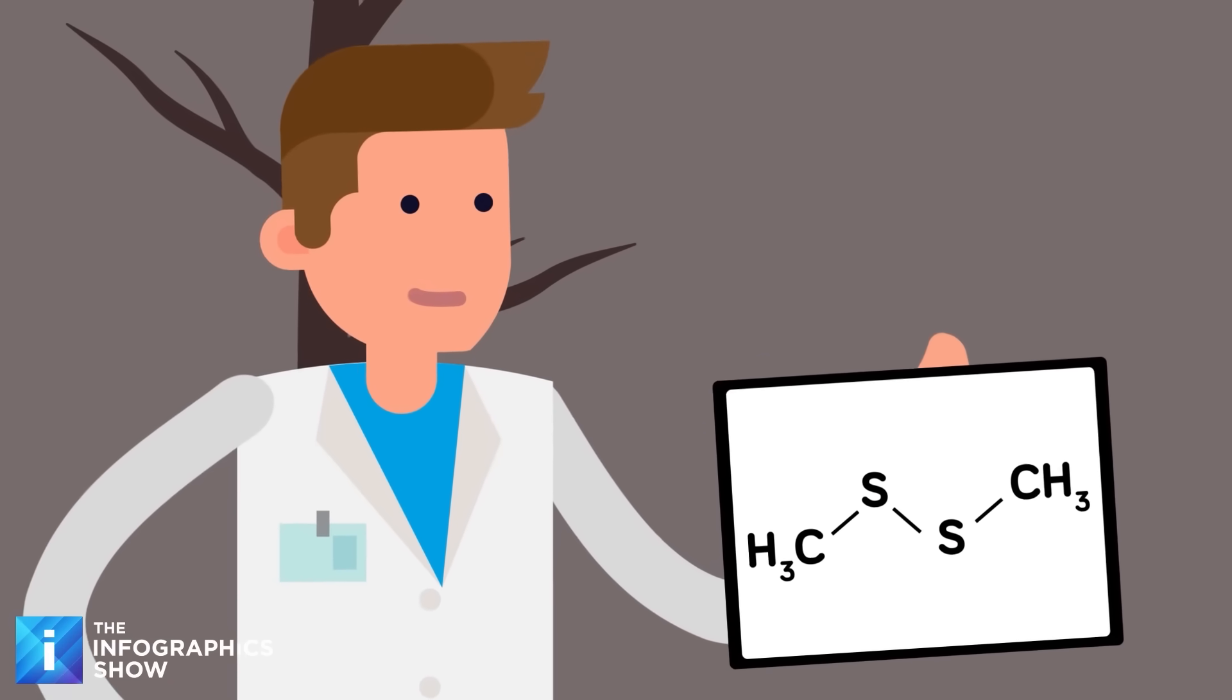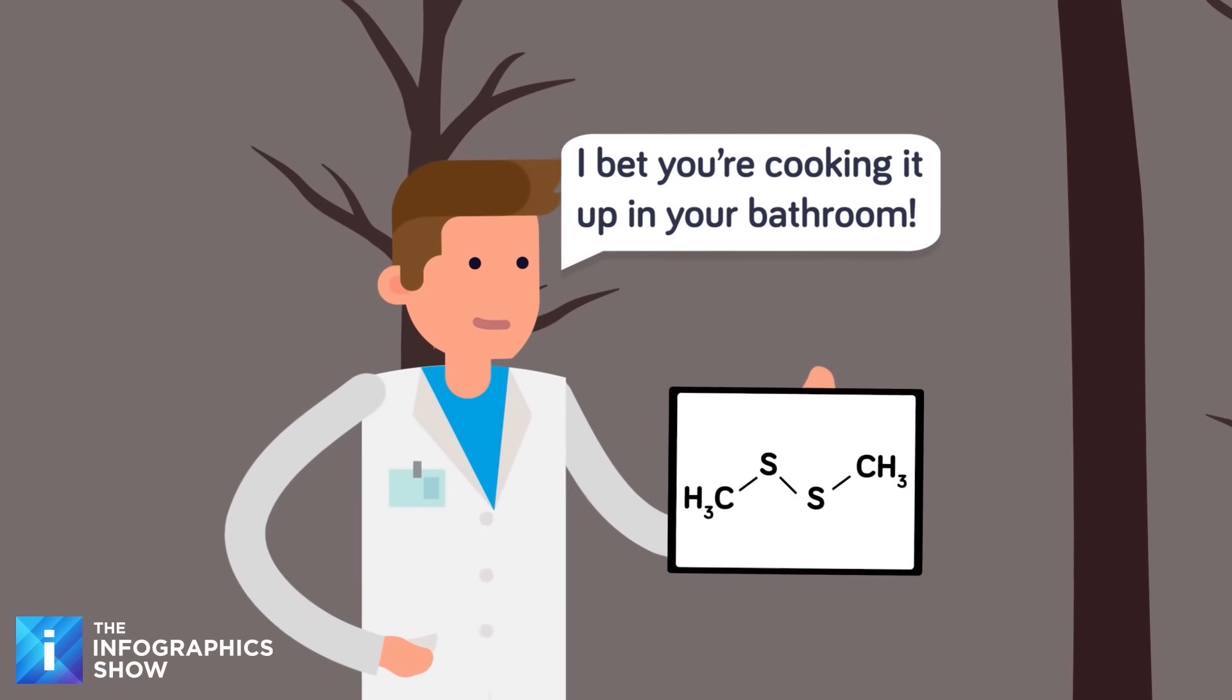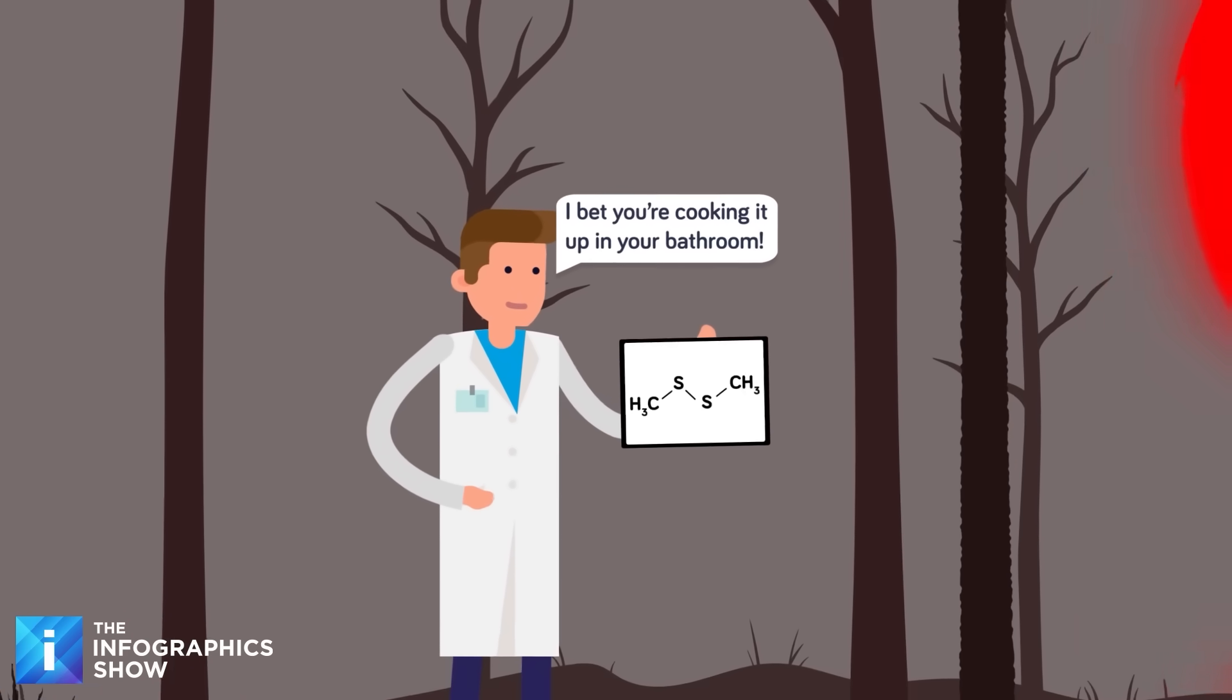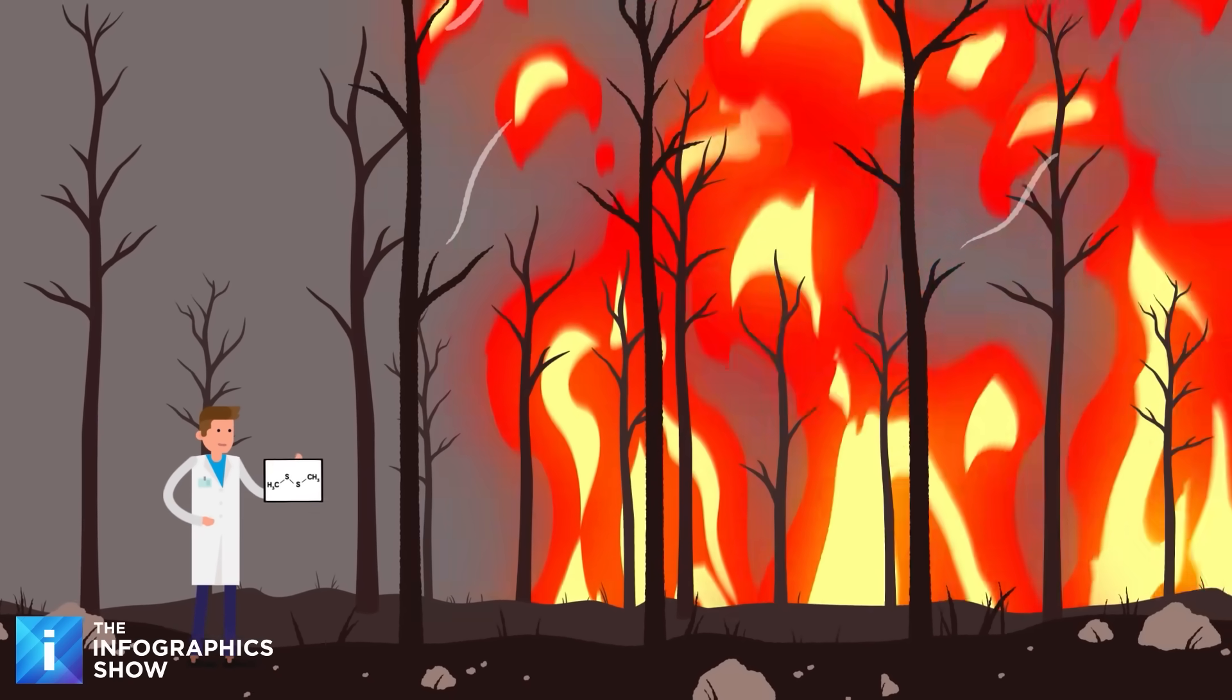DMDS can be produced by a variety of different organisms, including bacteria, fungi, plants, and animals. For example, an increase in DMDS was detected in Australia following the burning of biomass and bushfires.